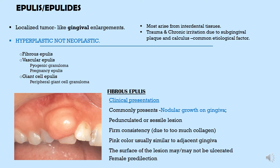Fibrous epulis, as the term suggests, is a gingival growth composed of fibrous tissue. Clinically it presents as a nodular growth on the gingiva which may be pedunculated or sessile. These are firm in consistency due to the large amount of collagen produced by fibroblasts. They are usually pink in color, similar to the adjacent gingiva, and the surface may or may not be ulcerated. A female predilection has been noted for fibrous epulis.